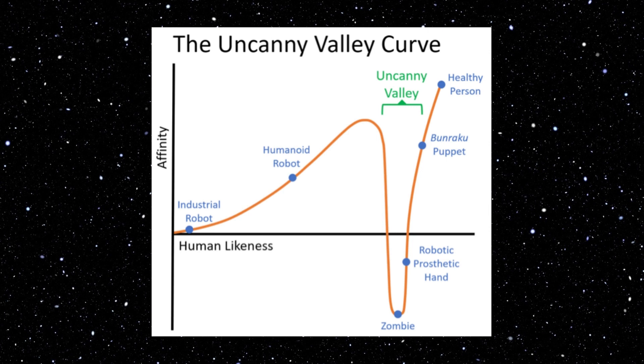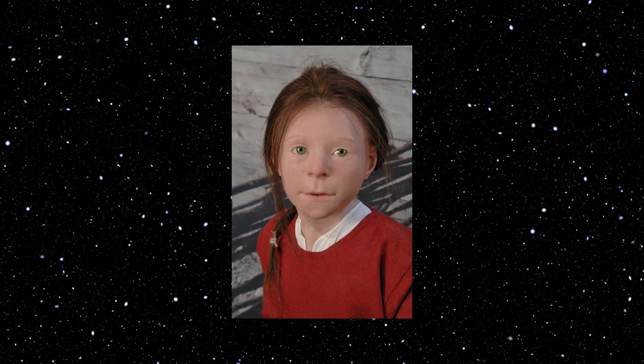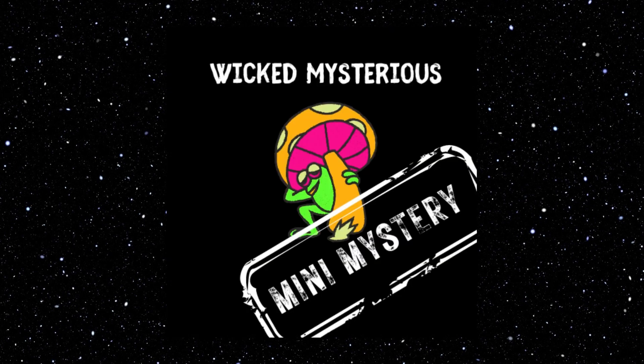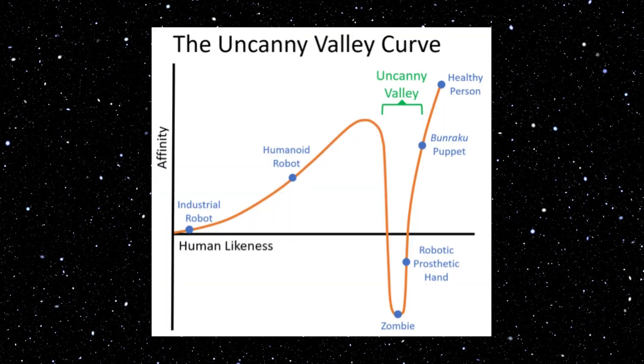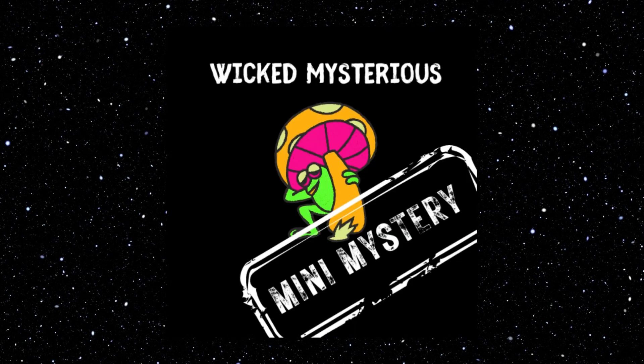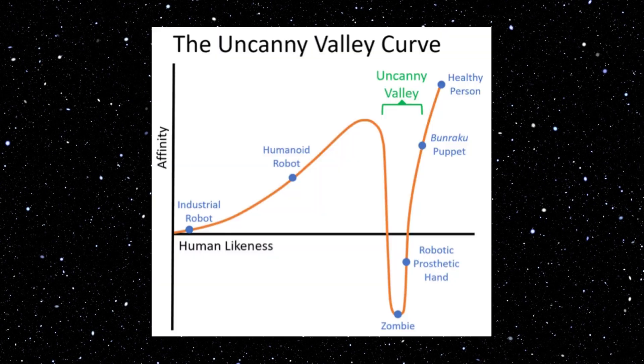Today's episode is The Uncanny Valley. The Uncanny Valley is a hypothesized relation between an object's degree of resemblance to a human being and the emotional response to that object. The Uncanny Valley is the region of negative emotional response toward robots that seem almost human. Movement amplifies the emotional response.